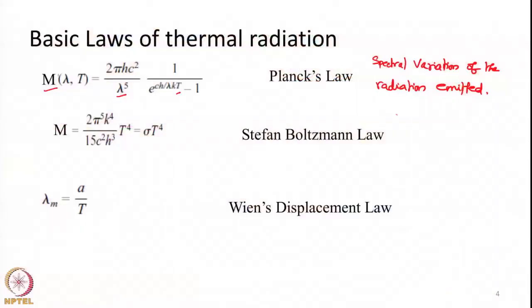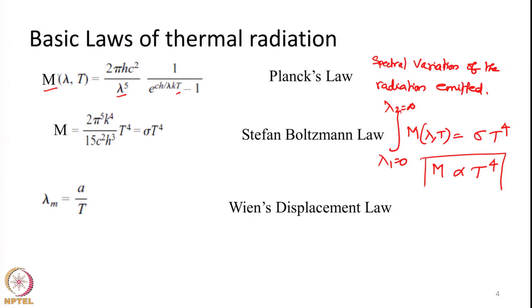Stefan-Boltzmann law is the integration of Planck's law over the entire range of the electromagnetic spectrum, that is, between 0 to infinity in wavelength, giving us the total radiant flux density from the object. Stefan-Boltzmann law states that the total radiant flux density of an object is proportional to the fourth power of its temperature — as the object's temperature increases, the amount of energy emitted increases correspondingly.